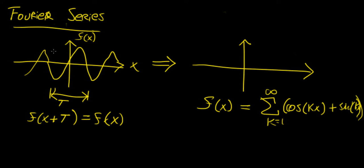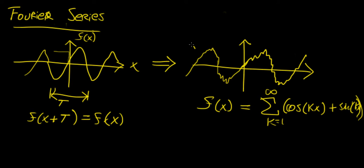It can even be a piecewise function that is rectangular. It can apply to any function, so long as it is well defined within that interval, and the period is defined by the size of that interval. As you increase the number of terms in the sum, you're going to increase the accuracy with which the Fourier series approximates that function. If you go to infinity, you get the original function replicated exactly. This idea turned out to be quite useful for solving certain partial differential equations and boundary value problems.